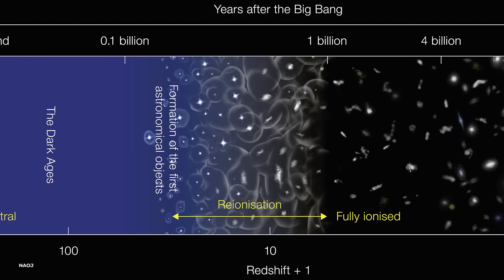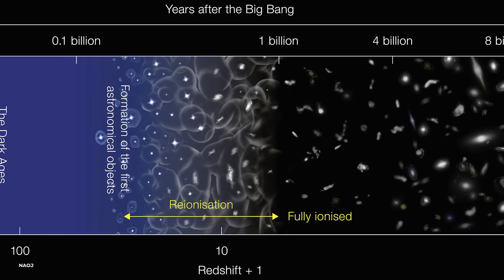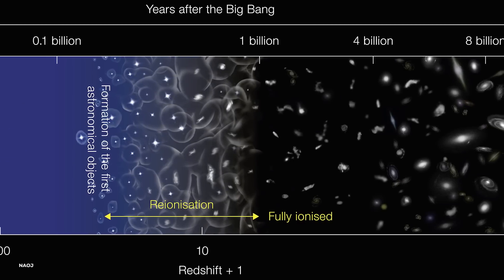The universe may have begun with energies as high as 10 to the power of 15 or 10 to the power of 16 GeV, which gradually decreased over time.